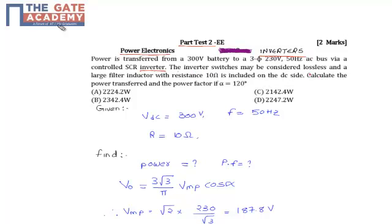which means there is no loss for switching operation. A large filter inductor with resistance of 10 ohms is included on the DC side.